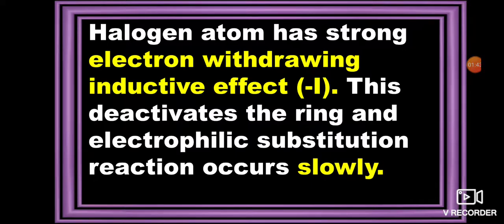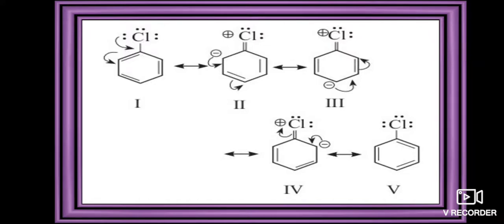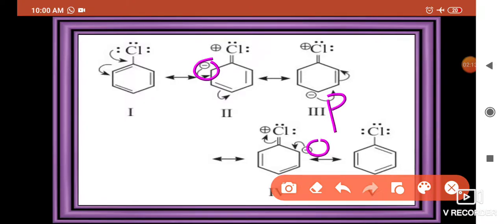Due to the minus I effect, the ring gets deactivated and the electrophilic substitution reaction occurs slowly. If you look at the resonance structures of chlorobenzene, you can observe that electron density is relatively more at the ortho and para positions. This is the ortho position, this is the para position, and again this is the ortho position. So electron density is more at ortho and para positions.